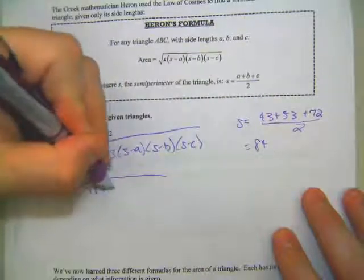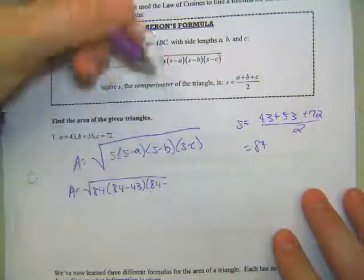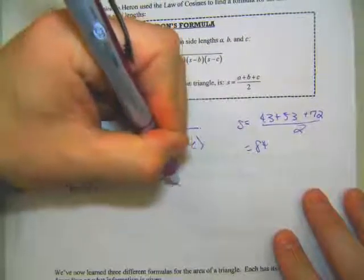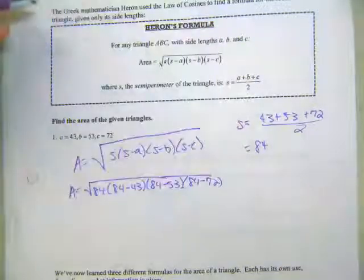So this is 84 times 84 minus 43 times 84 minus 53 times 84 minus 72.